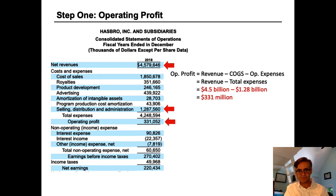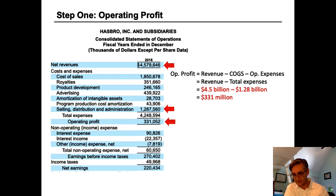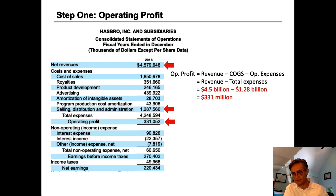Step one: the first thing we need to do is find the company's operating profit — sometimes called operating income, operating profit, or income from operations. For Hasbro, it's easy because it's given to us, clearly labeled as operating profit at $331 million in 2018. If it weren't given, we could calculate it as revenue minus cost of goods sold minus operating expenses, but do not deduct interest, non-operating expenses, or tax.